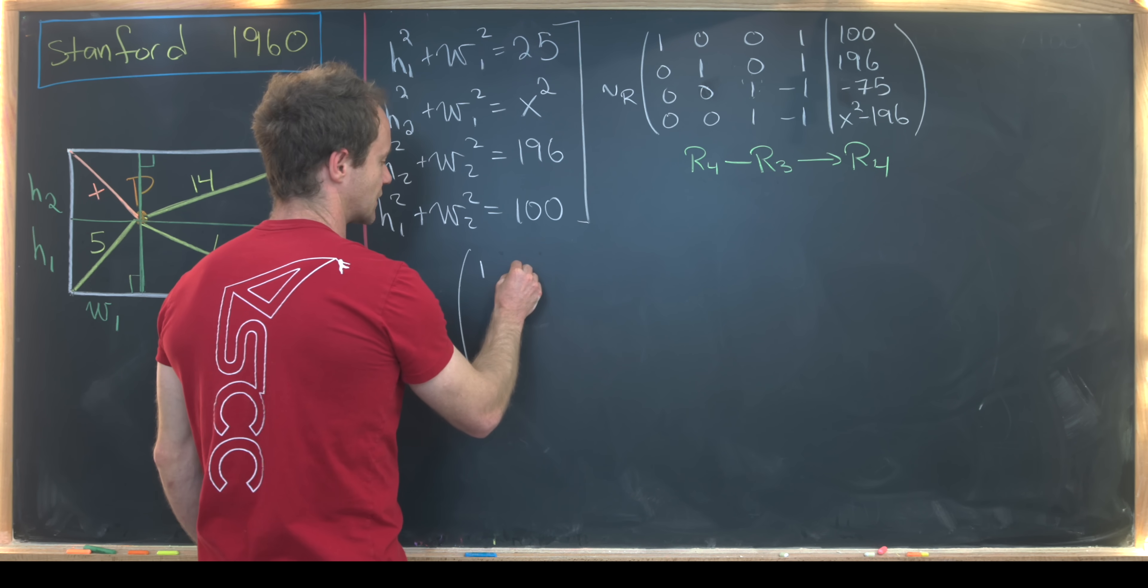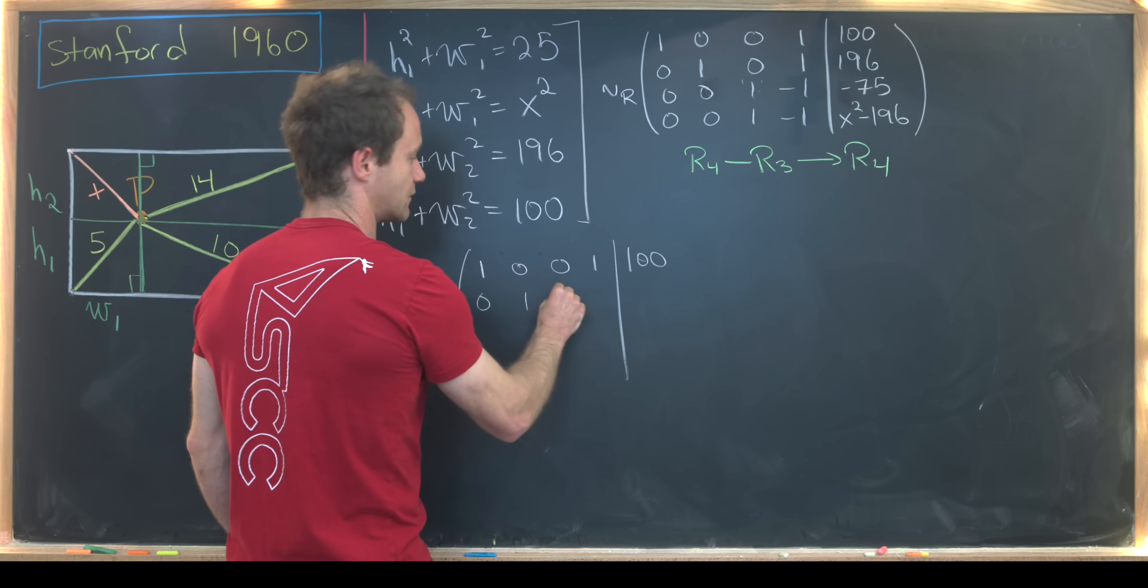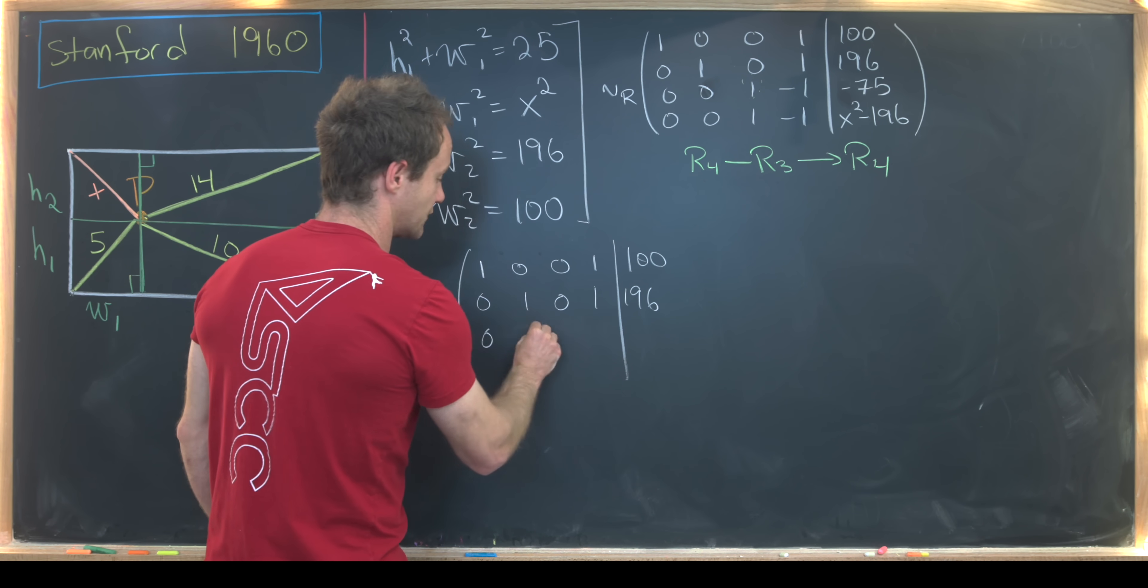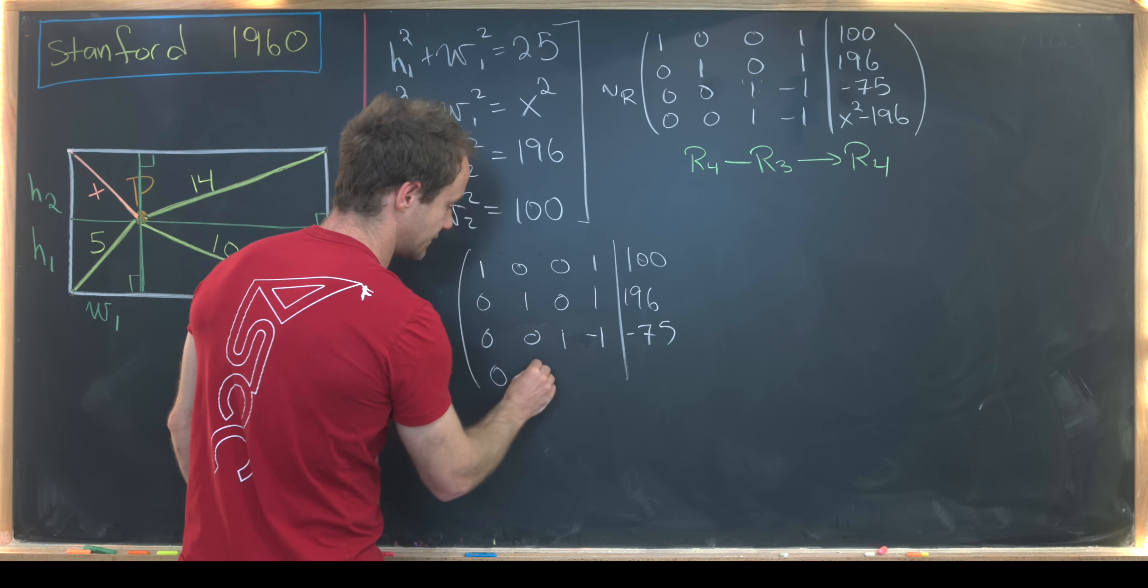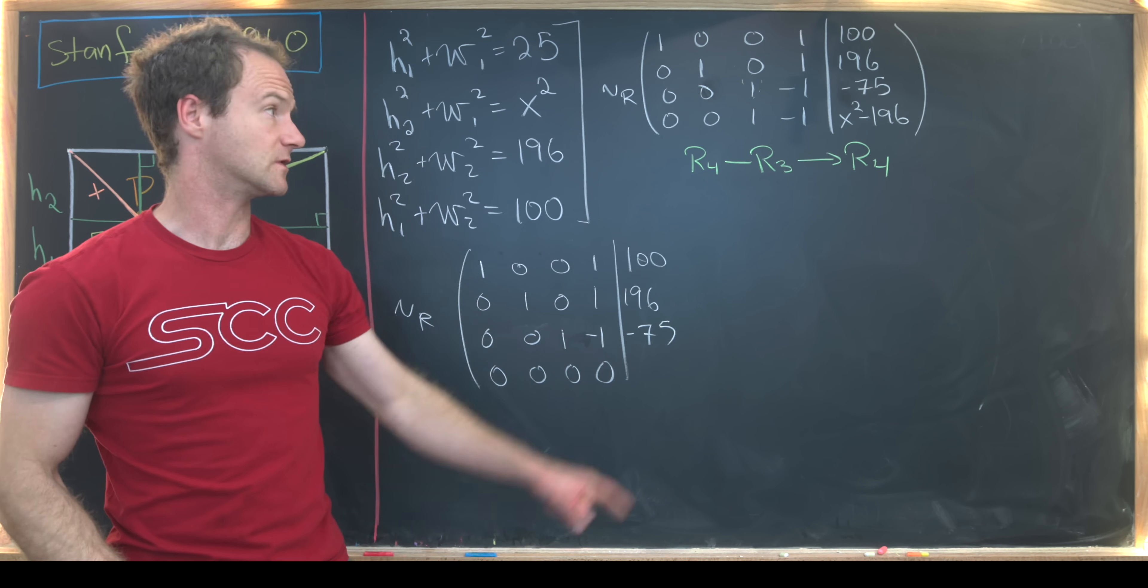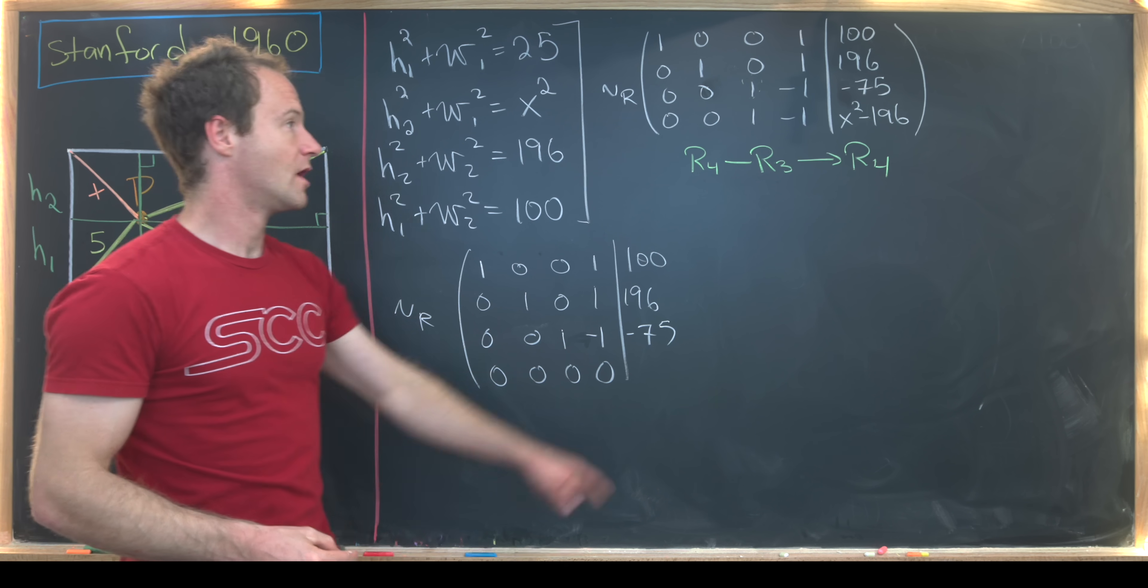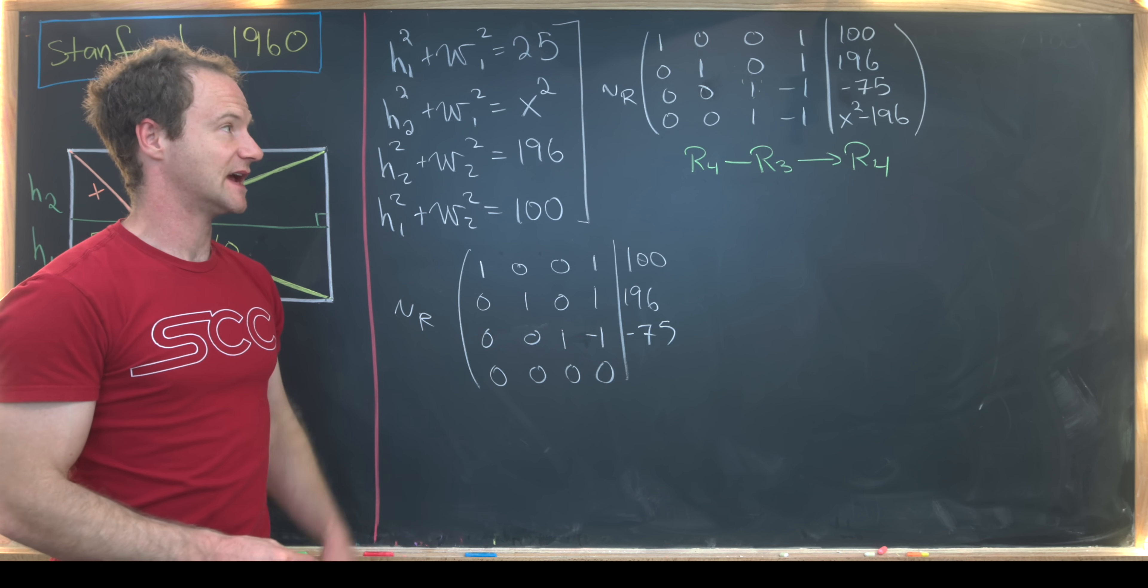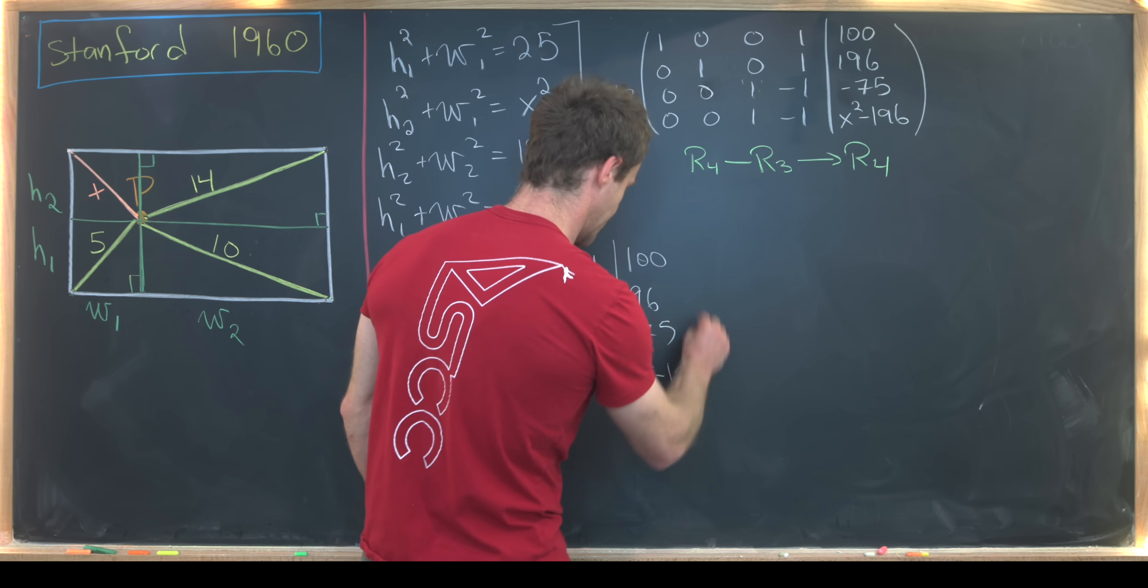That means we're keeping row 1, row 2, and row 3 fixed. So let's just copy those over. [1,0,0,1|100], [0,1,0,1|196], [0,0,1,-1|-75]. And then finally, we'll have [0,0,0,0]. That's from this subtraction. Notice that this minus 1 minus negative 1 canceled out. That could be problematic. But let's see what we get over here. We'll have x² - 196 minus negative 75. That's plus 75. That gives us x² - 121.